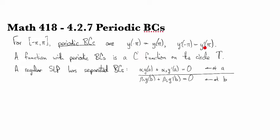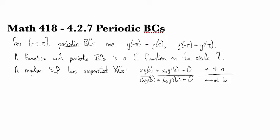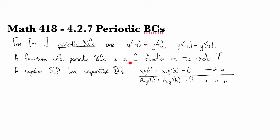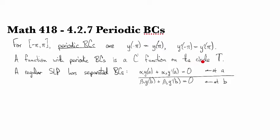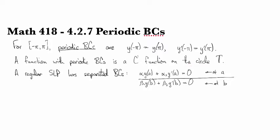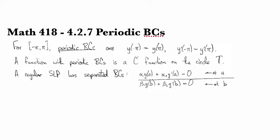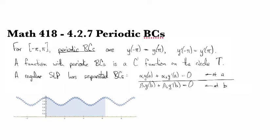and the value of its derivative to be equal at both ends of the interval. So a function with periodic boundary conditions is essentially a continuously differentiable function on the circle. And so what I mean by that is that if we look at a periodic function, so here's some periodic function,